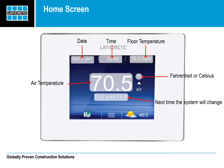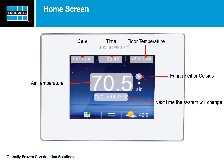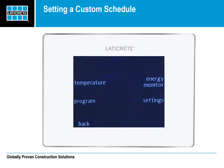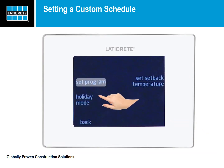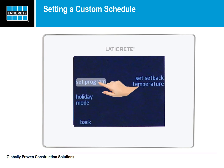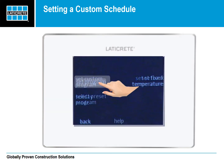To get started with a custom program, press the Menu button, which is the three horizontal lines at the bottom of the screen. Next, select the Program button and then select Set Program, followed by selecting Set Custom Program.